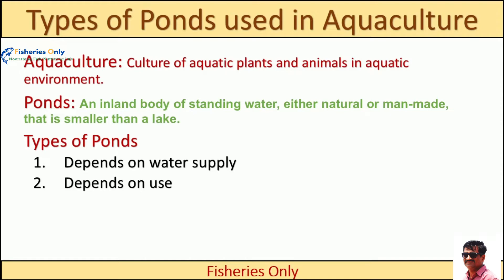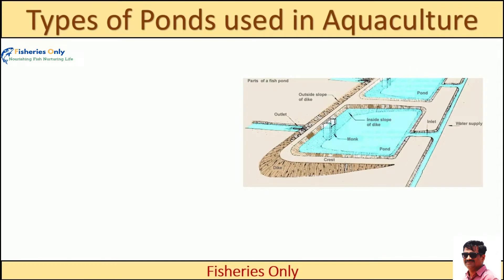Ponds help aquaculture to produce aquatic plants and animals, and most farmed animals come from ponds. Our main aim is to discuss the types of pond used in aquaculture. There are two classification systems: one depends on the water supply to the pond, and the other depends on the use of the pond in aquaculture.